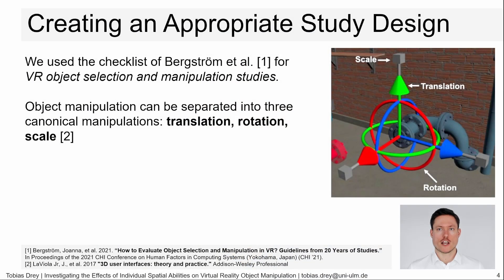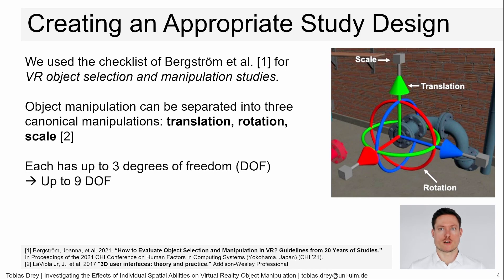As guidance, we followed the checklist for VR object selection and manipulation studies by Bergström et al. Object manipulation can be separated into three canonical manipulations: translation, rotation, and scale. You can see in the picture how they are often performed by using Gizmos. Each of them can have up to three degrees of freedom in our three-dimensional world, meaning up to nine degrees of freedom if they are all used in one object manipulation. We focused on interaction techniques applicable to a standard head-mounted display setup based on mid-air controller input to provide generalizable and broadly relevant results.